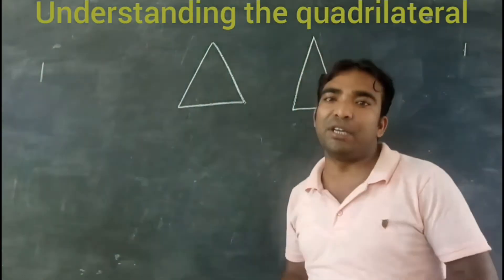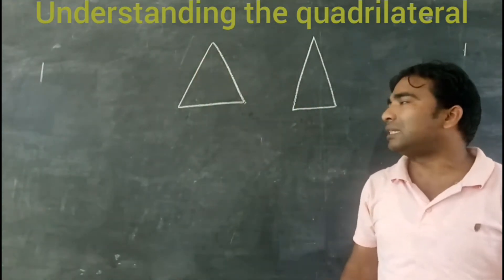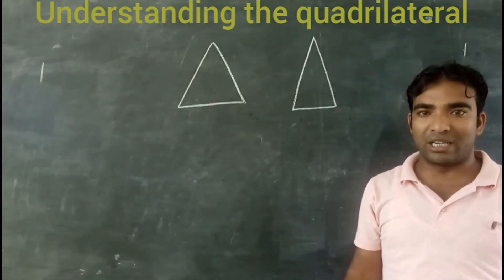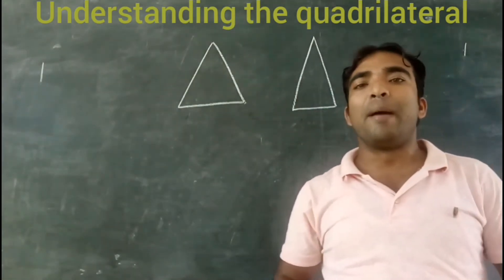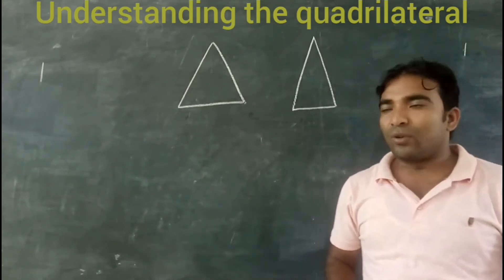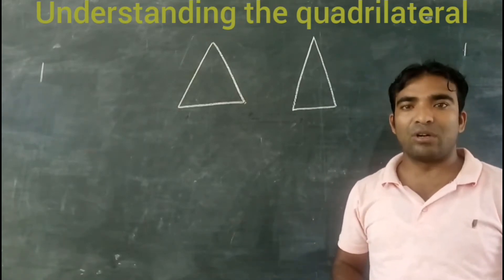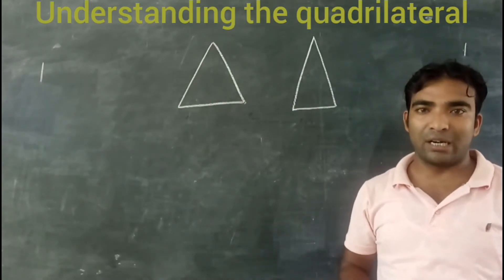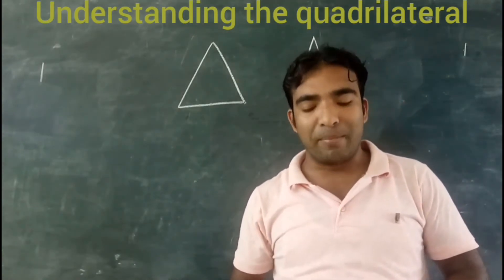So regular polygon means all the sides will be equal. If in a triangle all three sides are equal, it is known as a regular triangle, or we can also call it an equilateral triangle. In the case of a quadrilateral, when all four sides are equal, it is considered a square, or regular quadrilateral. Similarly, we have regular pentagon, regular hexagon, regular heptagon, regular octagon, regular nonagon, and regular decagon.